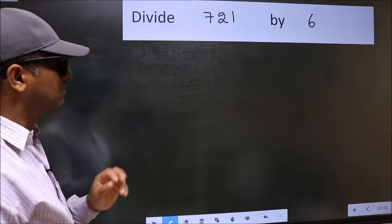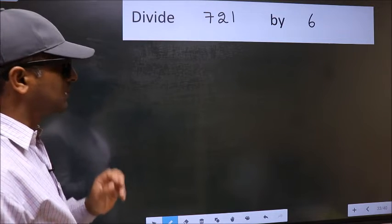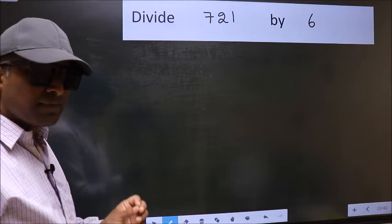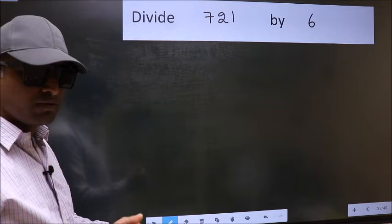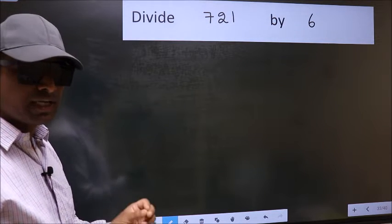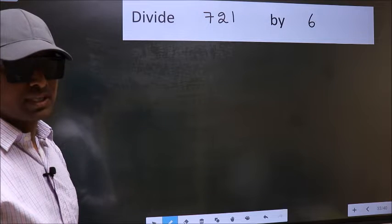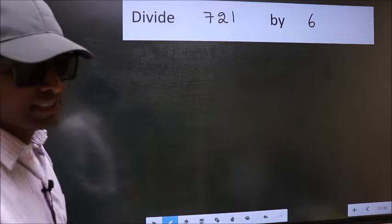Divide 721 by 6. While doing this division, many do this mistake. What is the mistake that they do? I will let you know. But before that, we should frame it in this way.